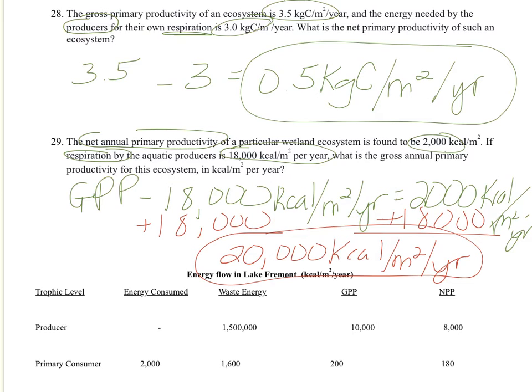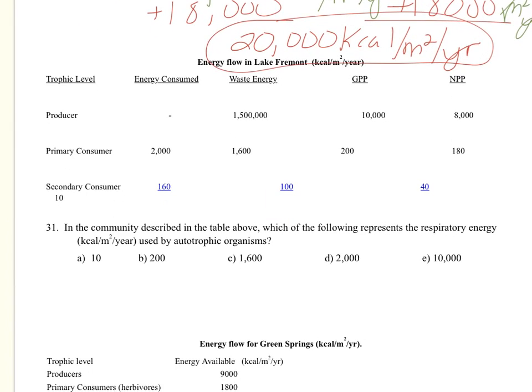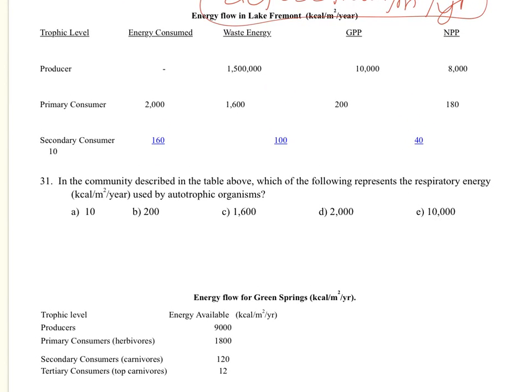Alright, so those ones are pretty easy. I gave you those questions just to remind you of productivity. So the next one has you look at a chart, and it's a multiple-choice question. So we have all of these givens. Our trophic level, we have a producer, primary consumer, secondary consumer. And this 10 right here kind of came where it should be right here. And then the 40 should be here, and then the 100. Sometimes when these documents upload to my Explain Everything app, they don't do it correctly. So it's telling us here that the producer, we're not really concerned about the waste energy or the energy consumed at this point. For this question, it says,